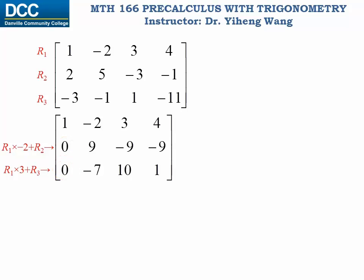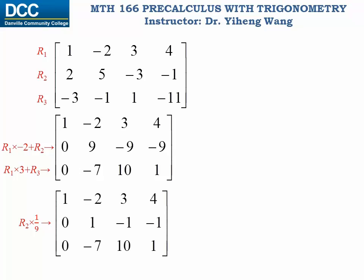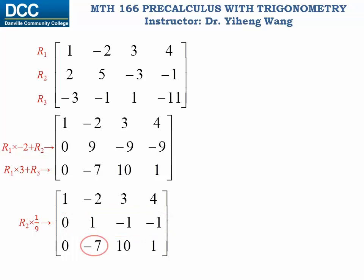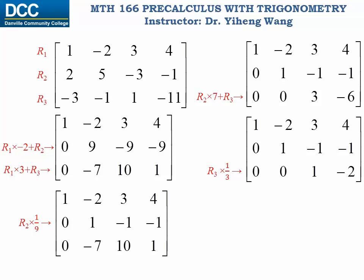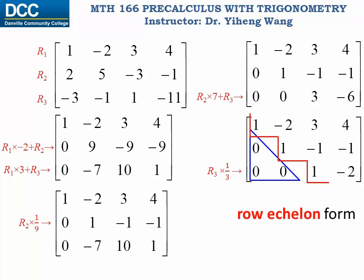For row 2, if we divide it by 9, or multiply it by 1 over 9, then we get this new form, and row 2 is now in row echelon form as well. So next, we want this coefficient to be zero, and we're going to do that by adding multiples of our new row 2 to row 3. Therefore, we multiply row 2 by 7 and add it to row 3. Almost there — if we take row 3 and divide it by 3, or multiply it by 1 third, then we achieve this form. As you can see, these three coefficients are all zero, and you notice this stair-like shape — we have achieved the row echelon form.